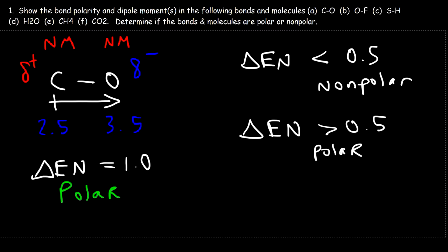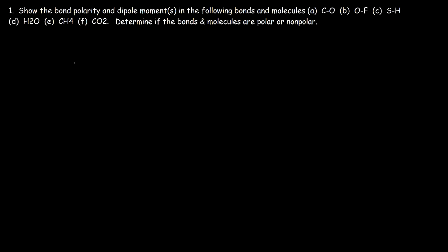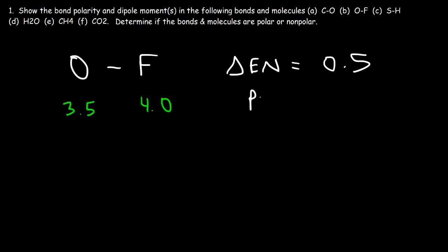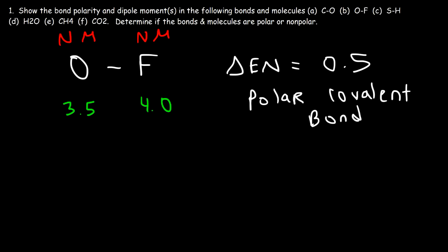Moving on to the second example, the oxygen-fluorine bond — indicate the bond polarity, dipole moments, and determine if it's polar or nonpolar. Oxygen has an electronegativity value of 3.5 and fluorine is 4.0, so the EN difference is 0.5, which makes this a polar covalent bond. Both oxygen and fluorine are nonmetals, and whenever two nonmetals combine, they typically form covalent bonds. However, this is polar because fluorine and oxygen don't share the electrons equally.